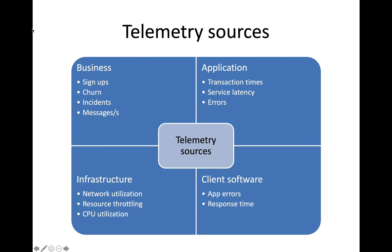There are a number of different sources in our platform that are generating these different types of telemetry. We have business activities that are happening where customers are signing up or generating support messages and contacting our support center. We have application telemetry where the application itself is collecting data on transaction times or errors that are occurring. We have infrastructure telemetry where we can gather information from our networking infrastructure to see the amount of bandwidth being consumed and CPU utilization on our computing resources.